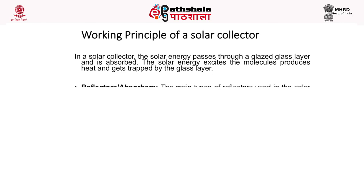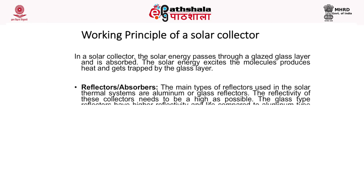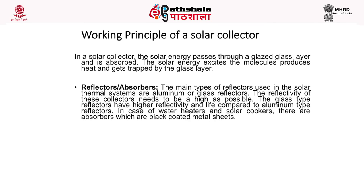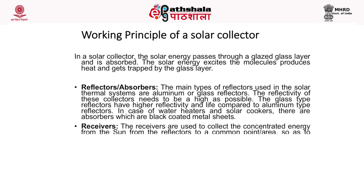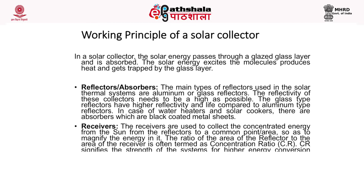In a solar collector, solar energy passes through a glazed glass layer and is absorbed. The solar energy excites the molecules, produces heat, and gets trapped by the glass layer. The main types of reflectors used in solar thermal systems are aluminum or glass reflectors. The reflectivity of these collectors needs to be as high as possible; glass-type reflectors have higher reflectivity and longer life compared to aluminum-type reflectors.